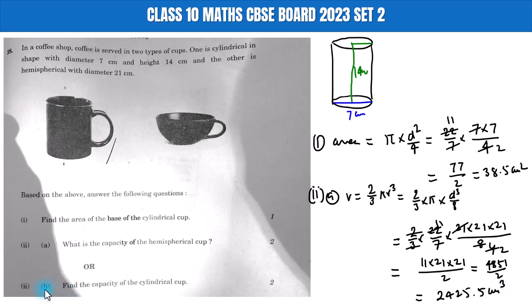Find the capacity of the cylindrical cup. The volume of the cup is equal to πr²h. In terms of diameter and height, this is π times d² times h divided by 4. Substituting: (22/7) times diameter 7 cm squared times height 14 cm, divided by 4.